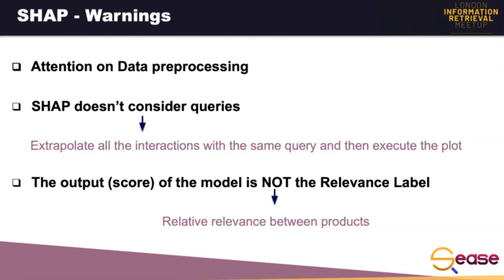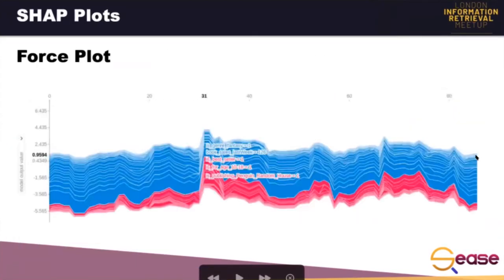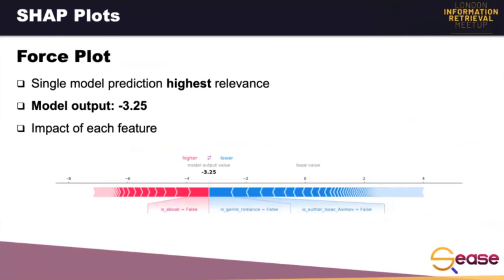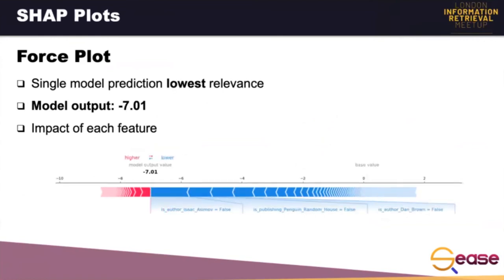The output — the score of the model — is not the relevance label we use in training and testing. The score represents the same concept if we look at the relative relevance between products. We also have to pay attention on how we interpret the score, because a negative value doesn't mean that the document is not relevant — we always have to consider it in relationship to the other products in the same query. As said before, since minus three is greater than minus seven, the ranking of these two results will be equivalent, both using the SHAP score or the relevance label.